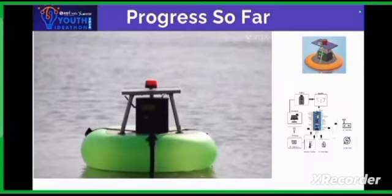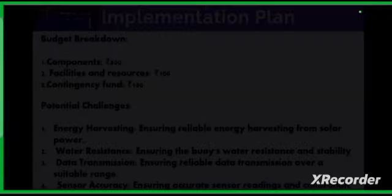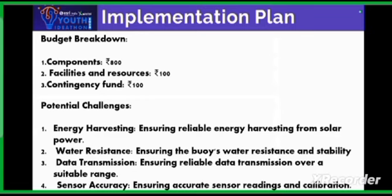Our budget breakdown is in three parts: components will cost 800 rupees, facilities and resources will take 100 rupees, and the contingency fund will also take 100 rupees. Potential challenges we will face include: energy harvesting — ensuring reliable energy harvesting from solar power; water resistance — ensuring the buoy's water resistance and sustainability; data transmission — ensuring reliable data transmission over a suitable link; and sensor accuracy — ensuring accurate sensor readings and calibration.